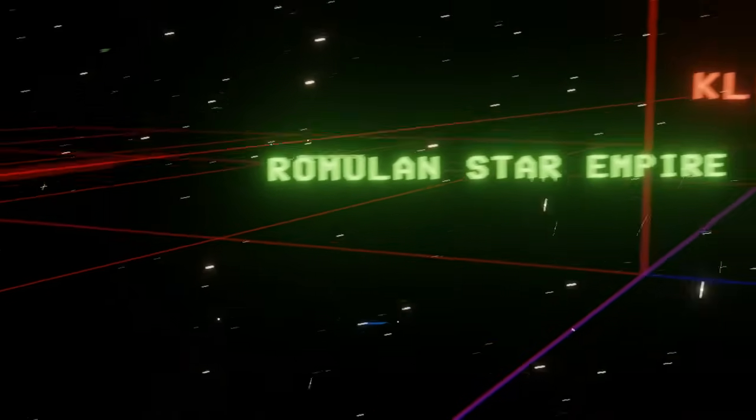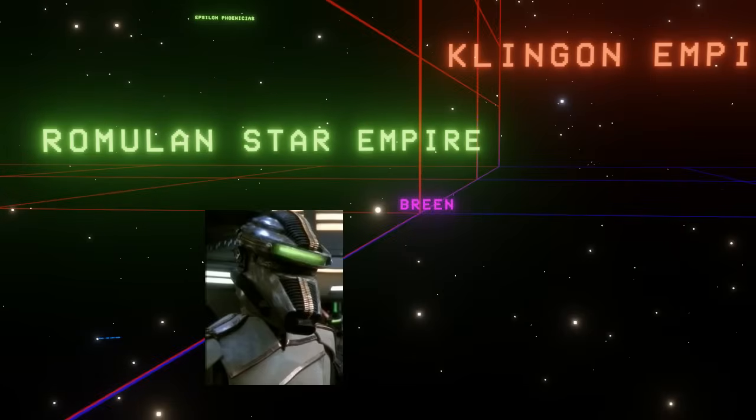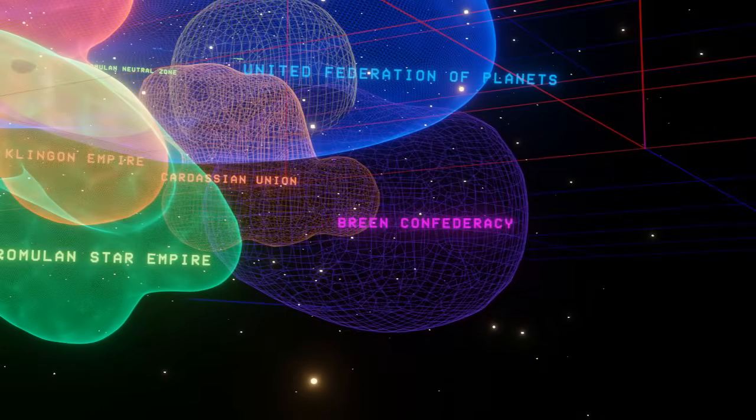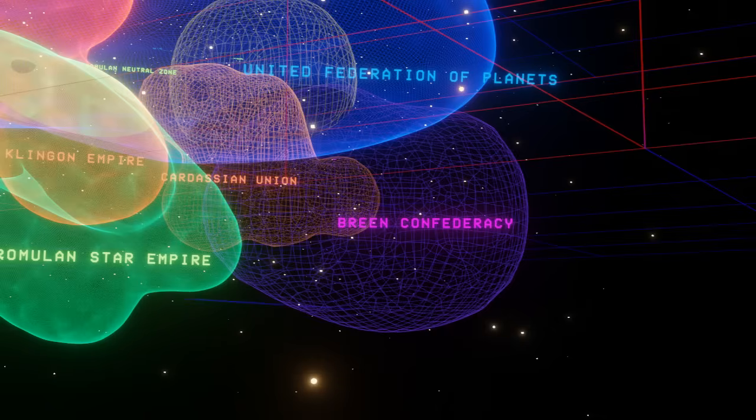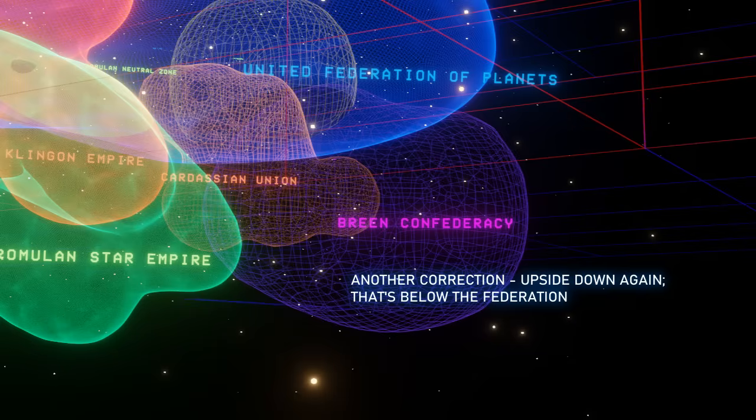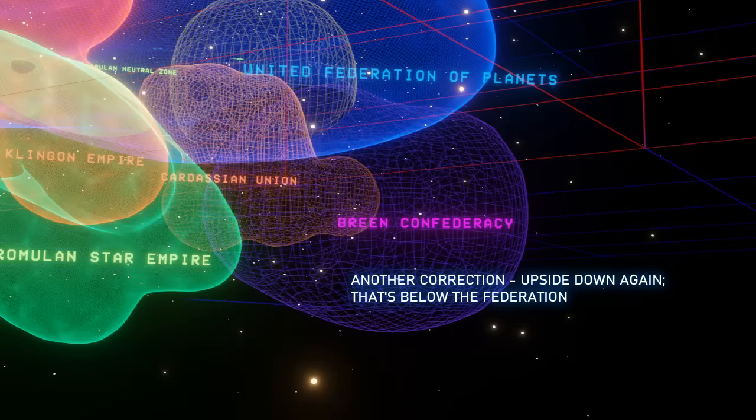But beyond Ferenginar, another 100 light-years or so, in the same relative direction from Earth, is the mysterious Breen Confederacy in Breen. And apparently the Romulans have had more contact with the Breen than the Federation. So for this reason, I've expanded the Breen territory to go over the Federation on the Z-axis in the third dimension, to be kind of close to the Romulan Star Empire.